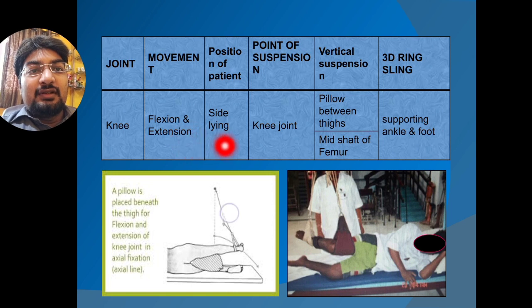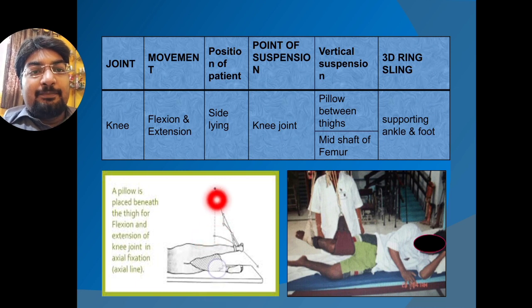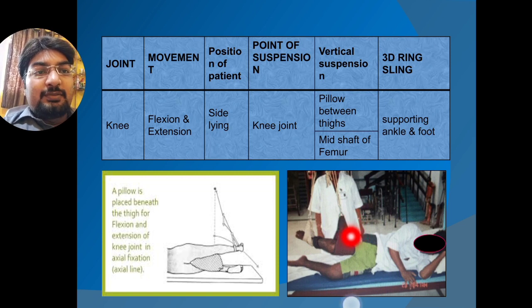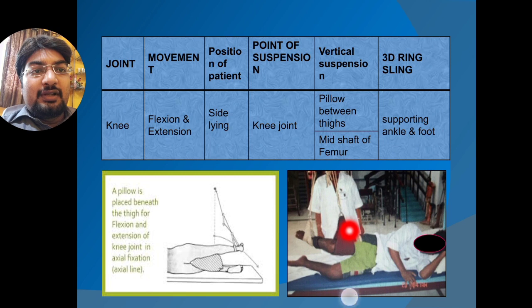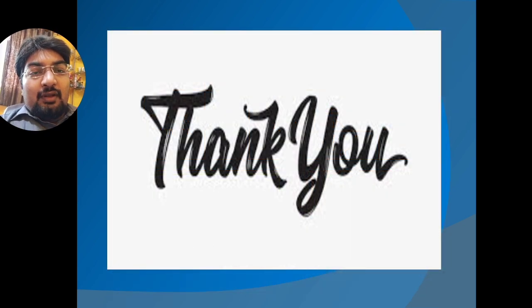For knee flexion and extension, the patient is in a side-lying position with the point of suspension at the knee joint. A pillow can be placed between the two thighs, with only one 3D-ring sling supporting the ankle and foot. Without a pillow, a vertical suspension sling is placed at the mid-shaft of the femur, the point of suspension is the knee joint, and one 3D-ring sling supports the ankle and foot.